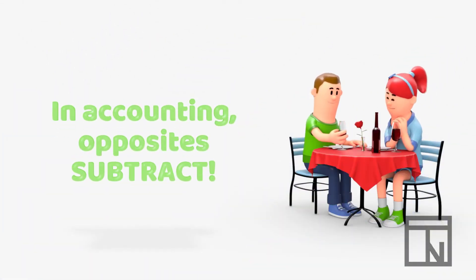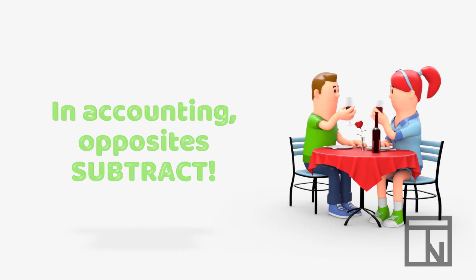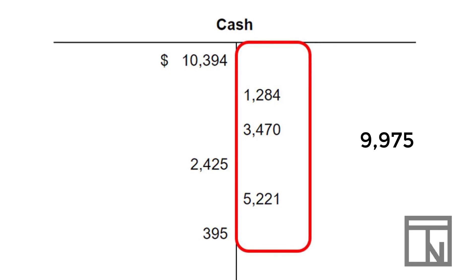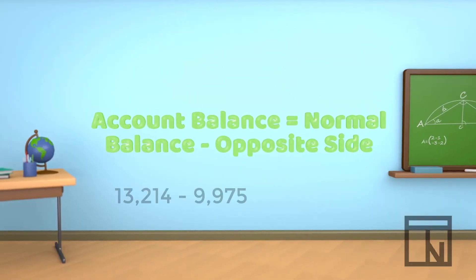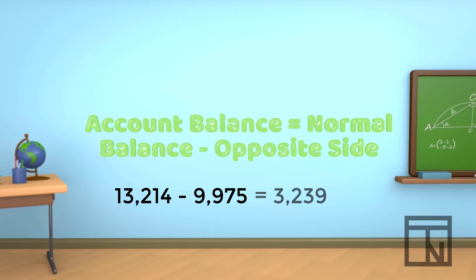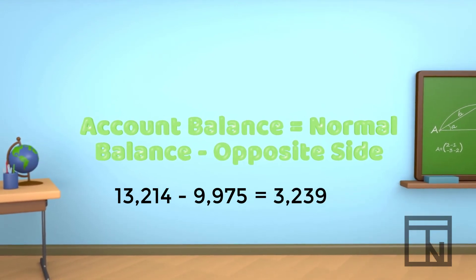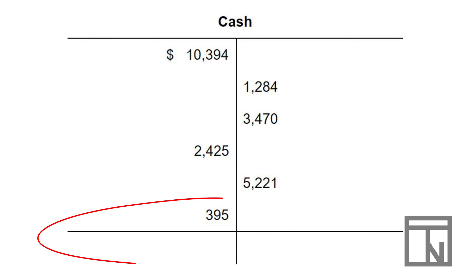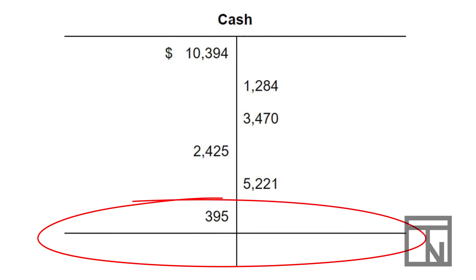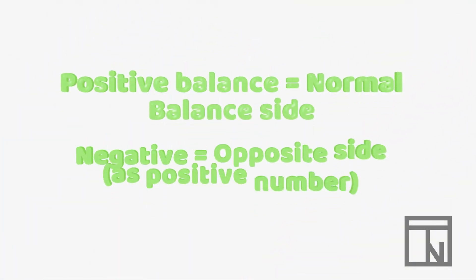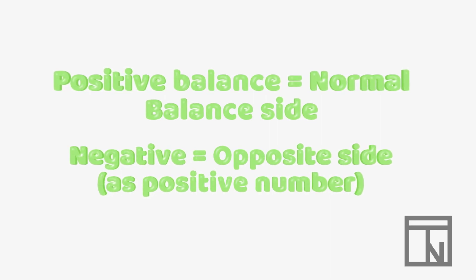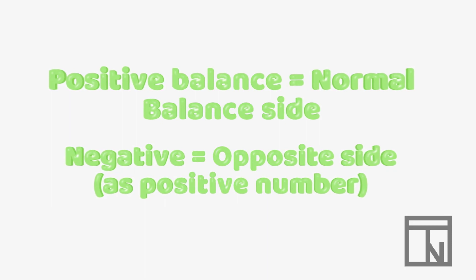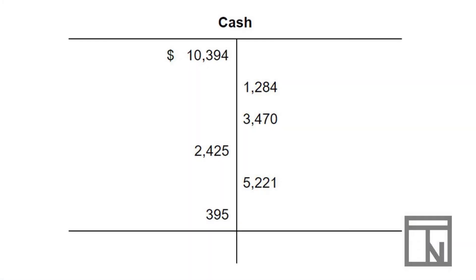Once you have the normal balance total, we need to deal with the opposite side. In accounting, opposites subtract, so we subtract all of the right or credit amounts from the total debits we calculated. The total of the normal balance side minus the opposite side's total is the account balance — the total value of money represented by that account. The last step is to record this balance on the T-account. T-account balances are always recorded below a horizontal line, so let's draw a line across the bottom. If the account balance is positive it is written below the line on the normal balance side; if negative, we write it as a positive number on the opposite side.